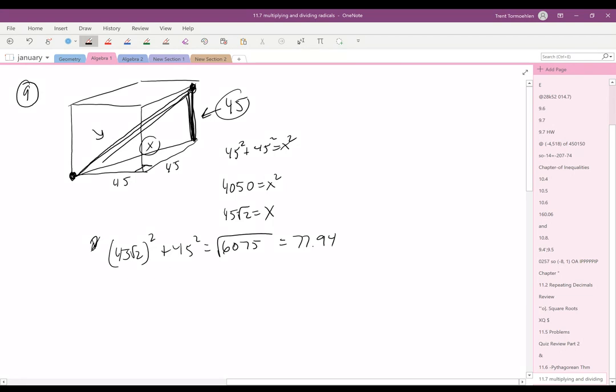It also turns out to be, and this is always true in a cube, the side length 45 times the square root of 3. 45 squared is 2025, 2025 times 3 is 6075, 45 the square root of 3. And that always turns out to be the case in a cube.